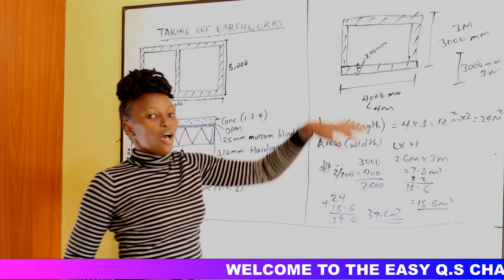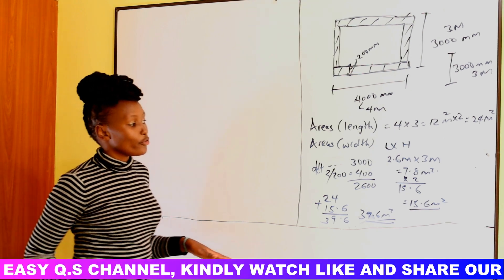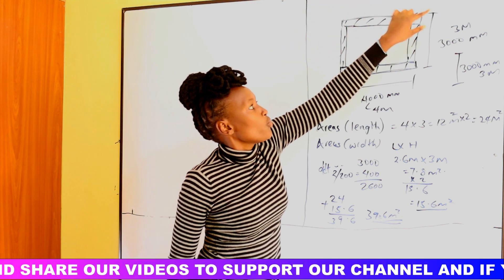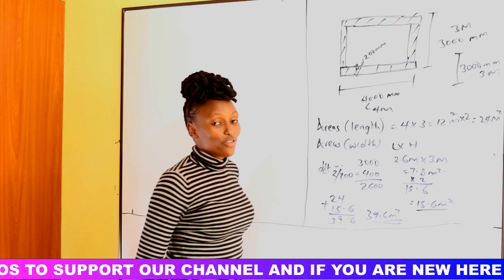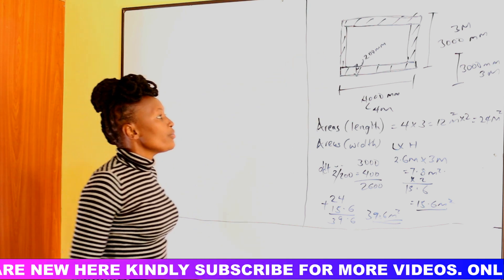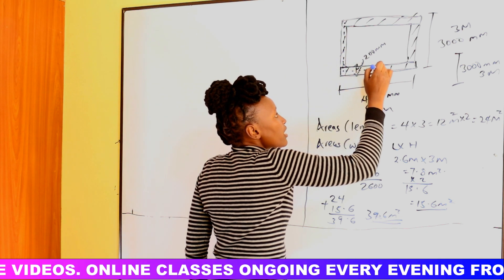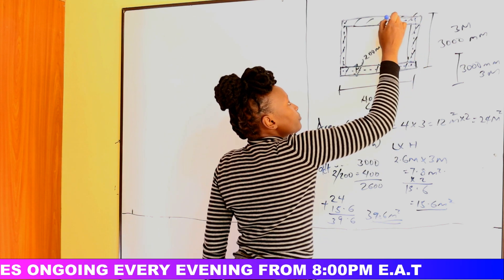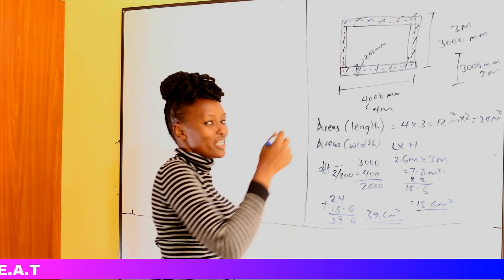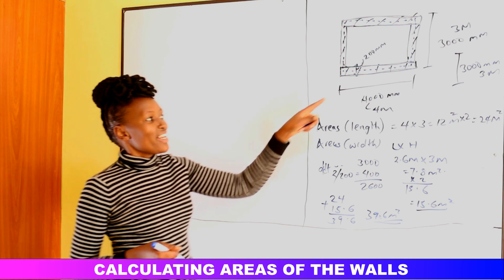We can also use a different method to calculate the wall area. Instead of separating the long walls and short walls, we can alternatively use the center line. We walk along the center of the wall — starting at one point and tracing through the center of all four walls. If we find the length of that broken center line and multiply by the wall height, we should get the same answer.